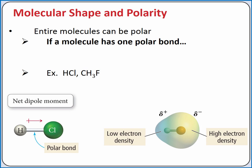We previously discussed whether a covalent bond is polar or nonpolar based on the electronegativity difference of the two atoms involved in the bond. Entire molecules can also be polar or nonpolar. If a molecule has one polar bond, it is a polar molecule. There will be a net dipole moment in the molecule so that the centers of positive and negative charge are separated. This is the case for HCl and CH3F.